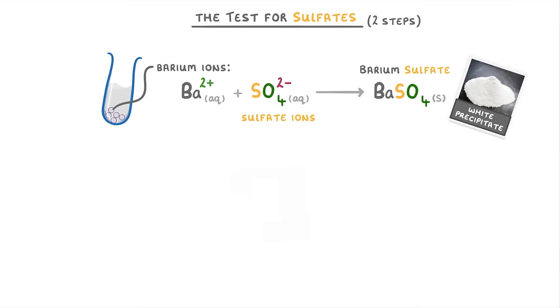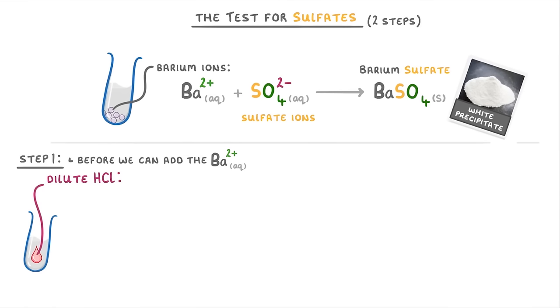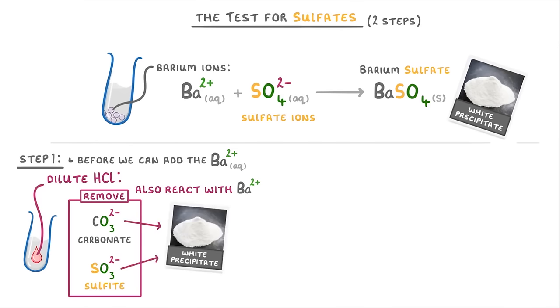Now that's the theory behind the test, but let's now look at the two steps themselves. Before we can add the barium ions, we need to add some dilute hydrochloric acid, which will remove any carbonate or sulfite ions in our sample. The reason we do this is because these ions are basically impurities, and could also react with our barium ions to give us a white precipitate, which would confuse our results.